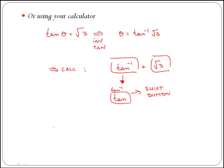If we do so, you will find that theta is equal to pi over 3, or 60 degrees, which is the same answer that you can get if you use the log tables.